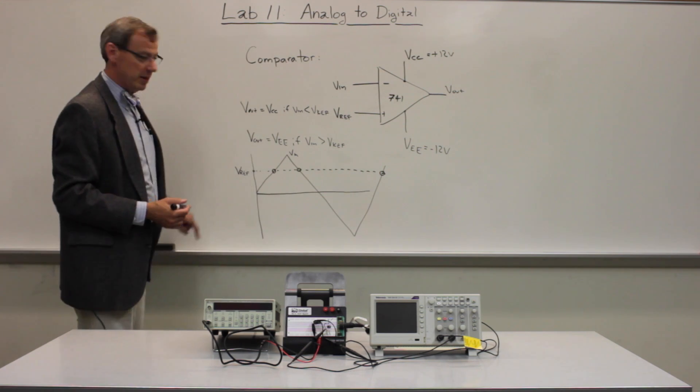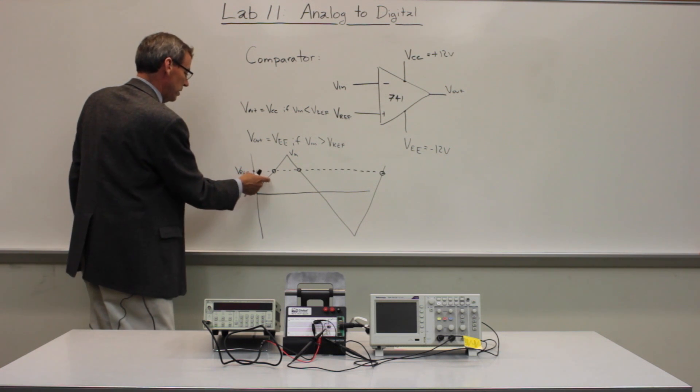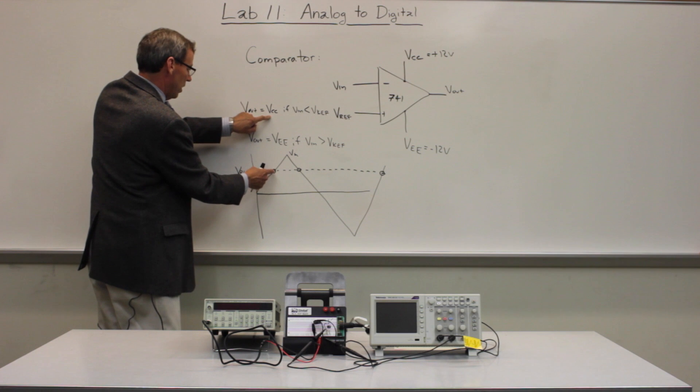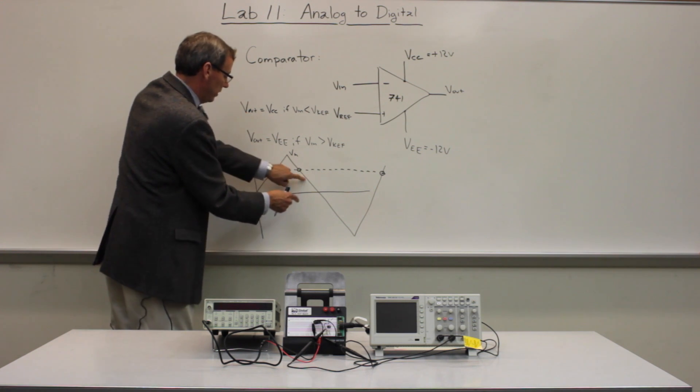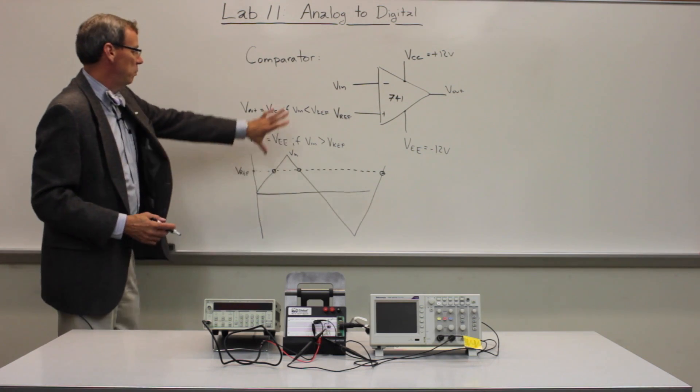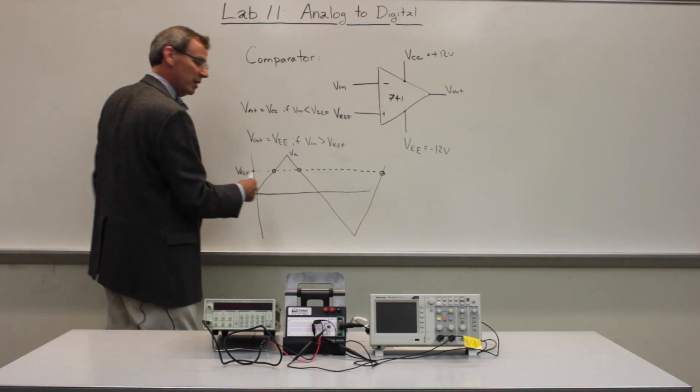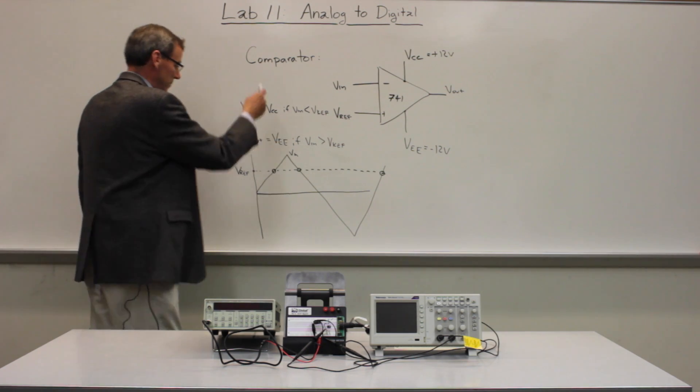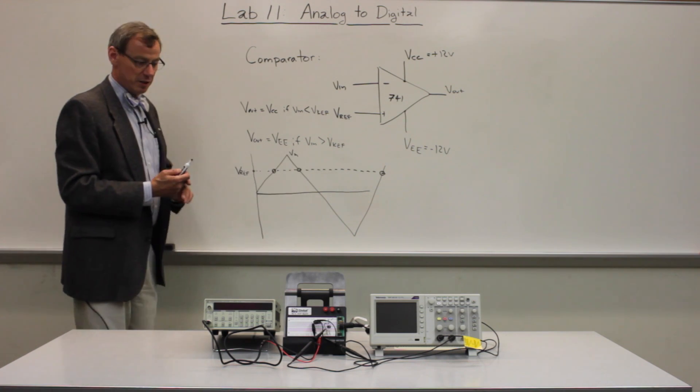And every time the triangle wave crosses the reference voltage line, we're going to make a transition. So here, the input voltage is below the reference. So we're going to have VCC out. We cross it. It's going to go to VEE while we're here. Cross it again. It's going to go back to VCC and so forth. So we're going to look at the input and the output of this and basically make a plot. The important thing about this comparator is it's exactly the same reference voltage that causes the transition.